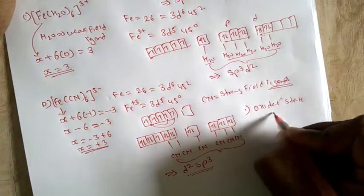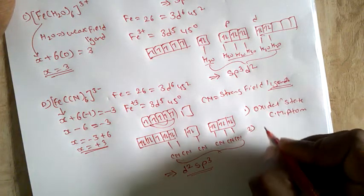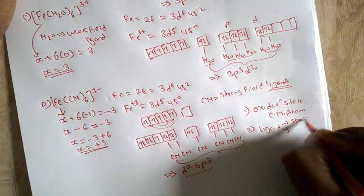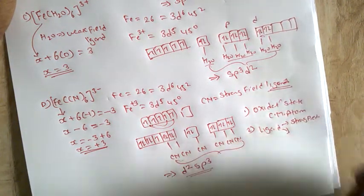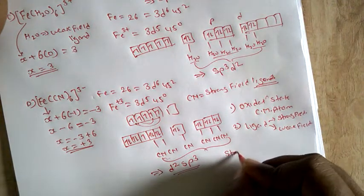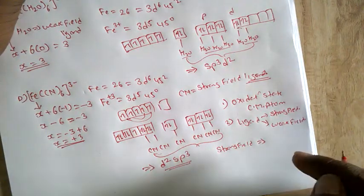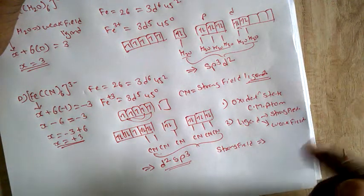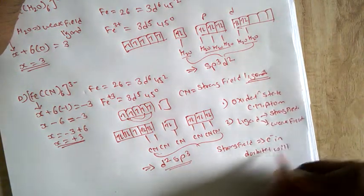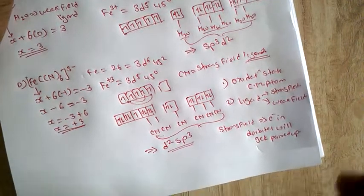Let me summarize the key points. First, find the coordination number of the central metal atom. Second, identify the ligand type — strong field or weak field. When the strong field ligand is present, the electrons in the d orbital will get paired up.